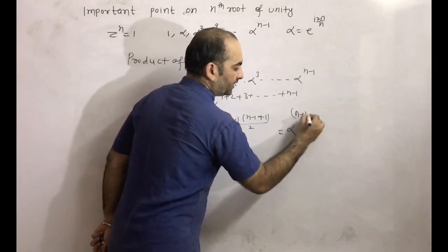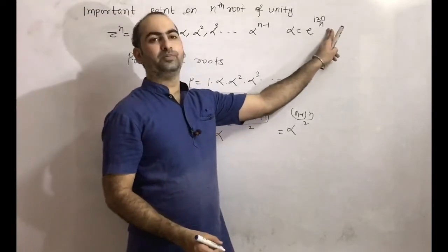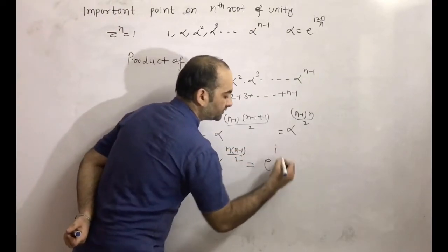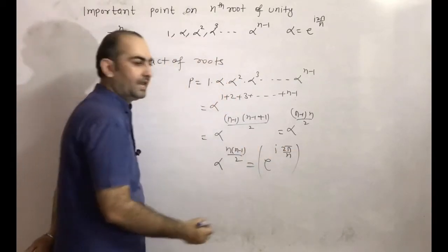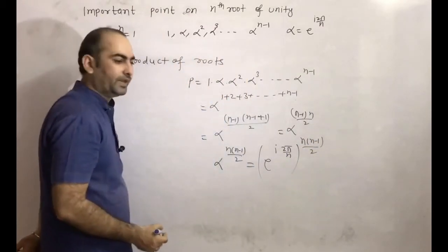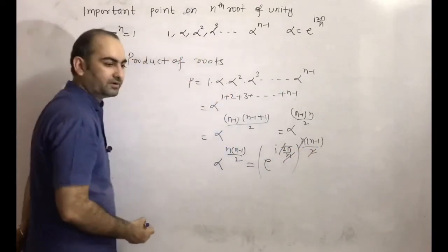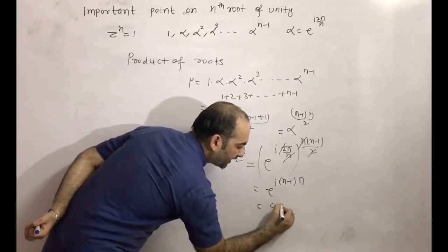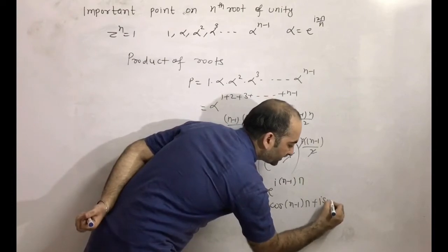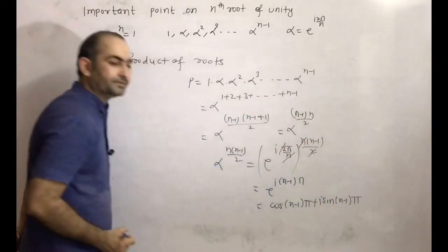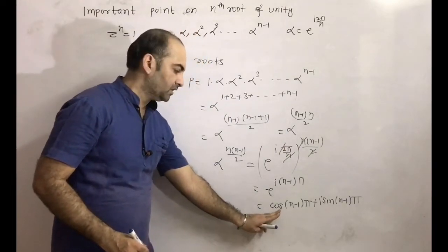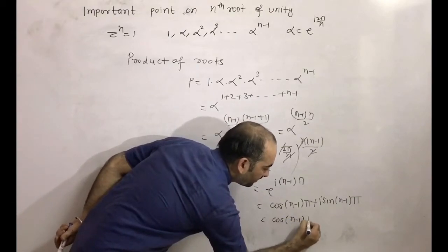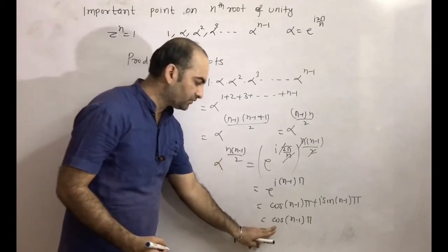So P = alpha^(n(n-1)/2). Since alpha = e^(i·2π/n), we get alpha^(n(n-1)/2) = (e^(i·2π/n))^(n(n-1)/2). The n's cancel and the 2's cancel, giving e^(i·(n-1)π) = cos((n-1)π) + i·sin((n-1)π). Since sin((n-1)π) = 0, this simplifies to cos((n-1)π).